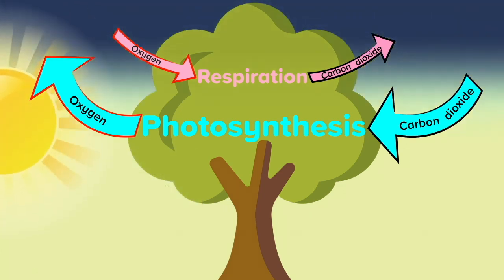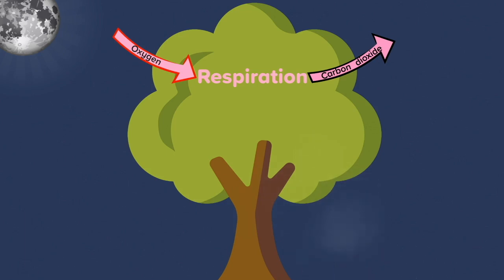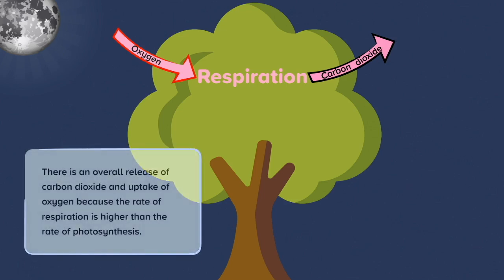At night time, photosynthesis stops because there is no light energy to start the chemical reaction between carbon dioxide and water. The plant still respires, though. Remember that all living things respire when they are alive. This means that overall, carbon dioxide has been released and oxygen is being taken in. There is an overall release of carbon dioxide and uptake of oxygen because the rate of respiration is higher than the rate of photosynthesis at night.